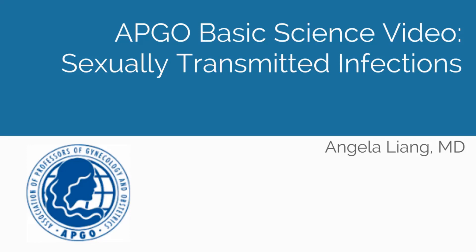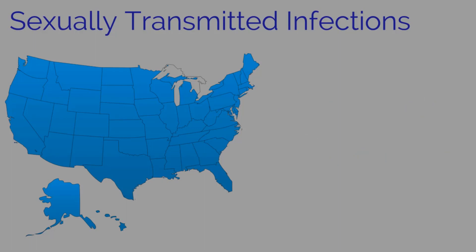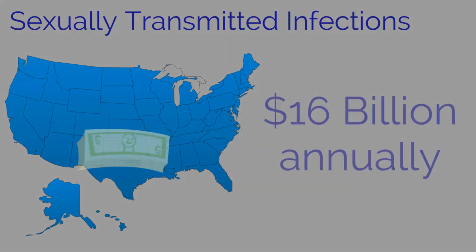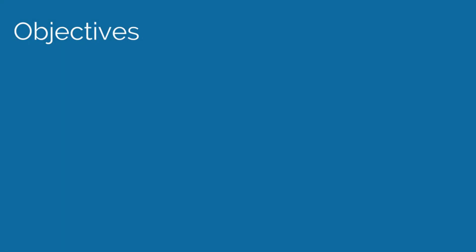APCO Basic Science Video Topic: Sexually Transmitted Infections. Sexually transmitted infections are infections passed from one person to another through intimate physical contact. The CDC estimates that nearly 20 million new sexually transmitted infections occur every year. They are a major public health problem and account for almost $16 billion in health care costs annually. Many cases go undiagnosed, resulting in lifelong health outcomes such as chronic pain and reproductive health complications.